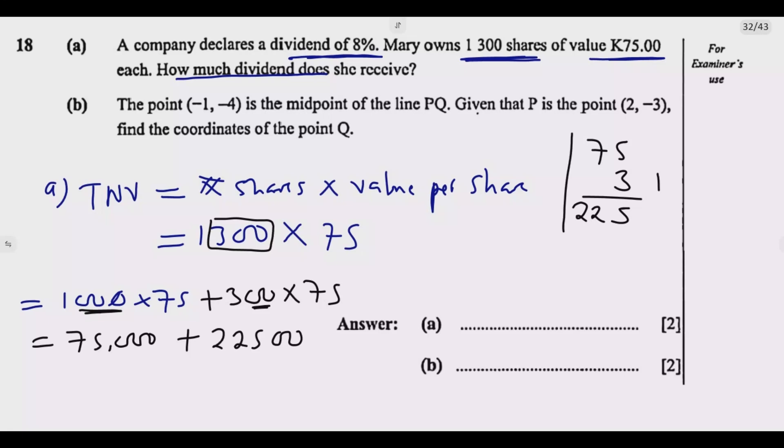Then 300 times 75. So it's 75 times 3 with two zeros. 3 times 5 is 15, carry 1. 3 times 7 is 21, plus 1 is 22. Then plus the two zeros, so 22,500.